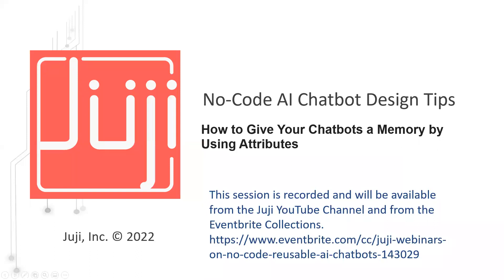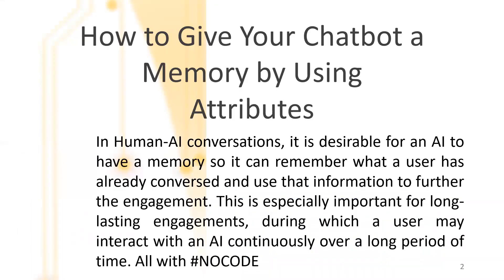Good morning and good afternoon. Today we're going to be covering a really great topic on how you can utilize already pre-built attributes. These attributes are automatic — they can be accessed when you're gathering information from, let's say, a multi-select, single select, or even a text response. You can then use those attributes over and over again within the chat conversation, and it actually creates a memory of what was entered.